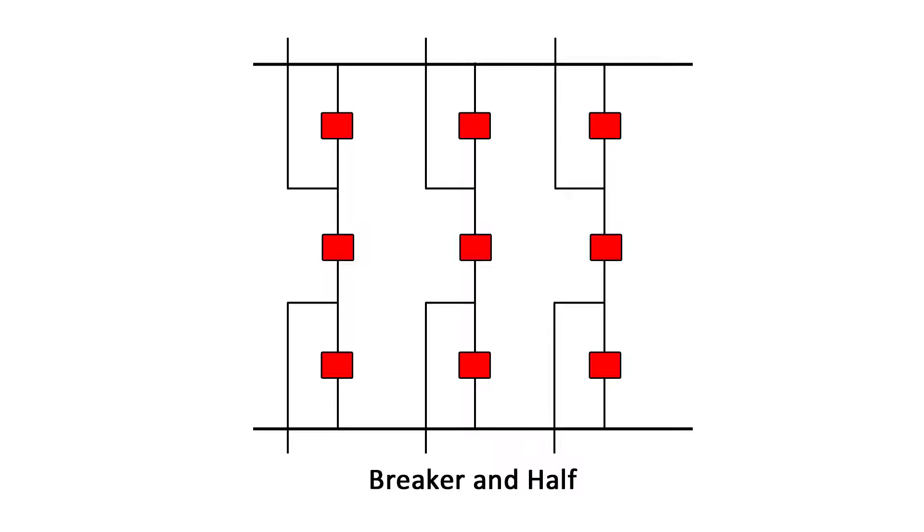three breakers are required for every two circuits, hence the one-and-half name. Think of it as to control one circuit requires one full-and-a-half breaker.